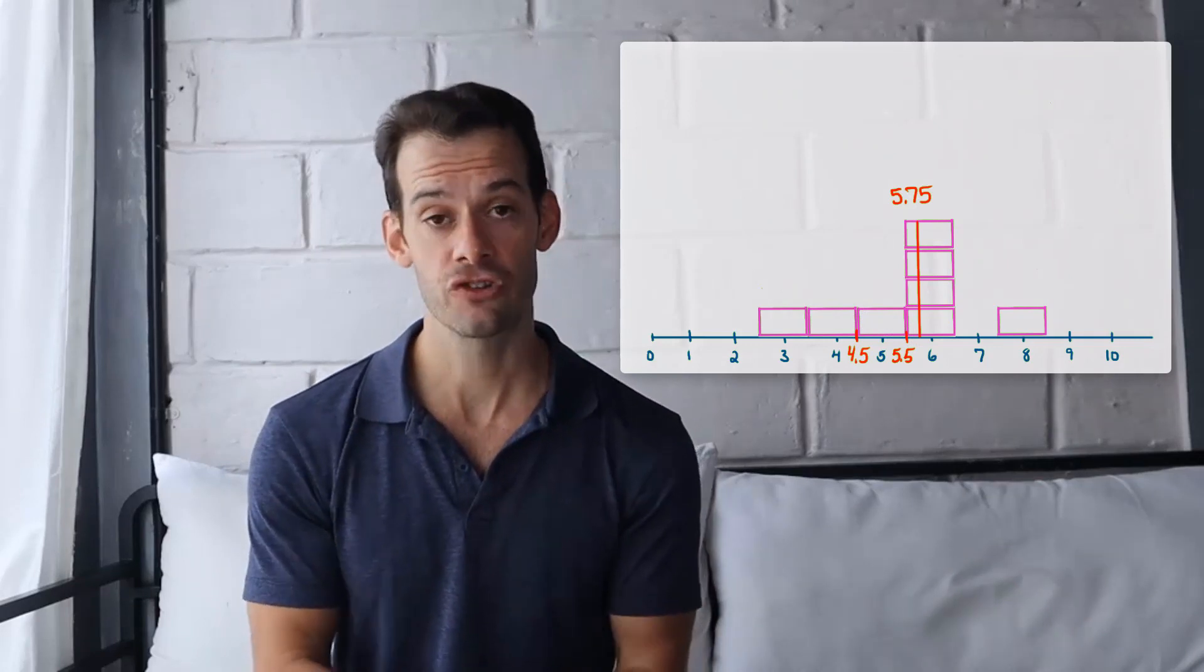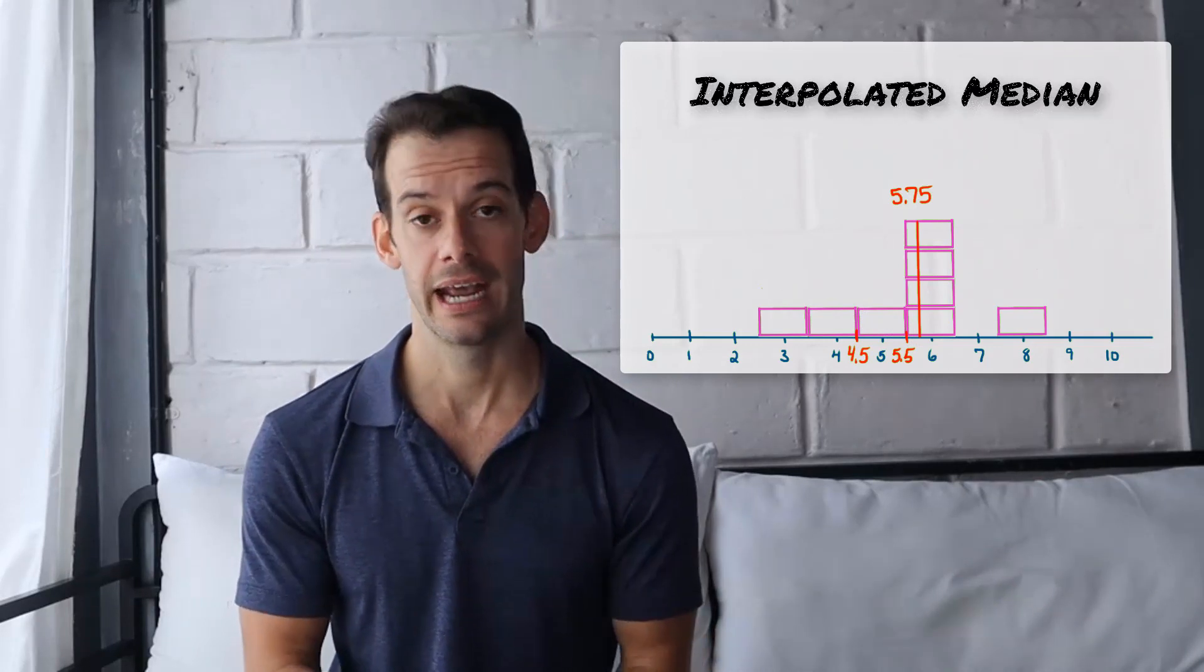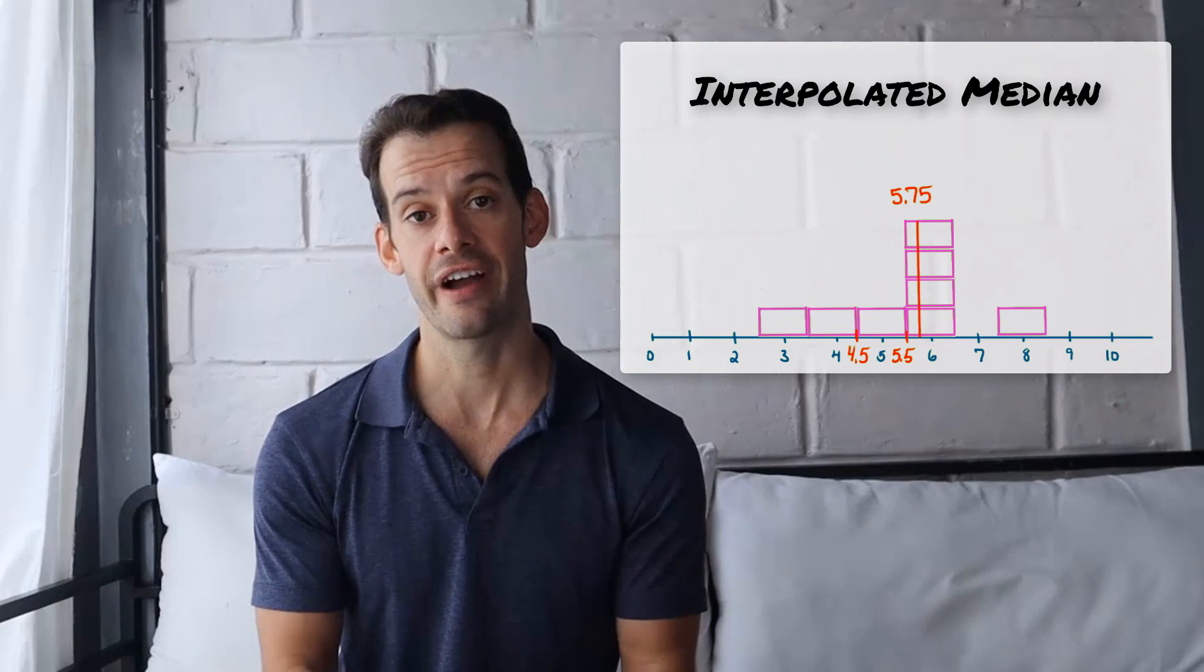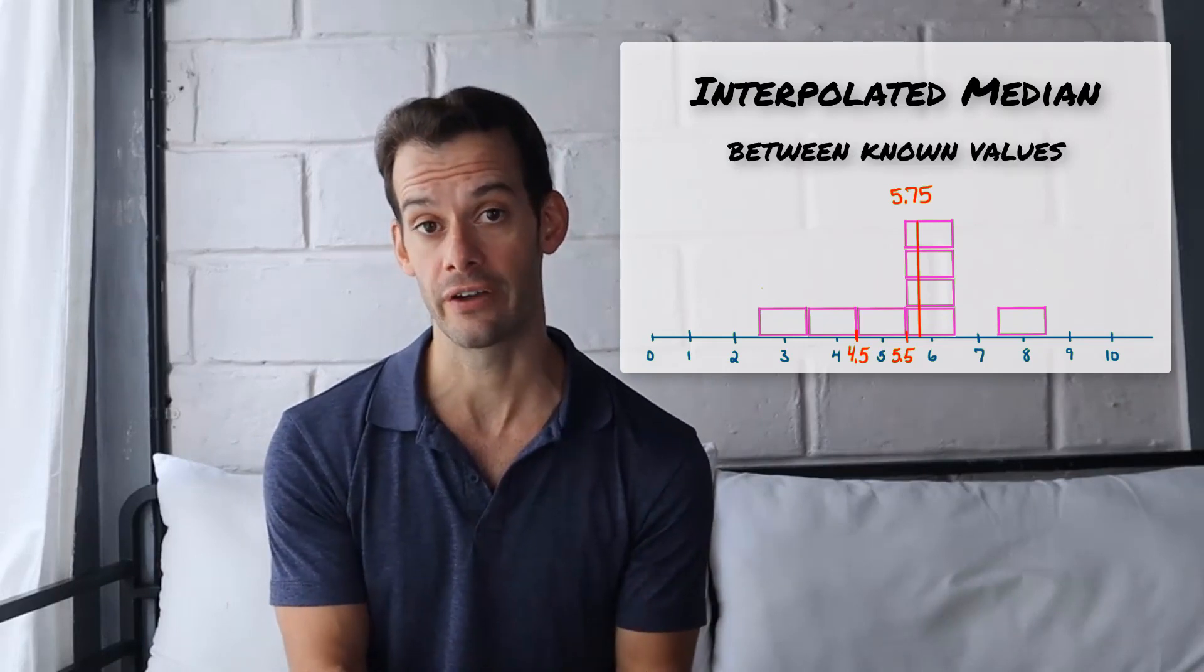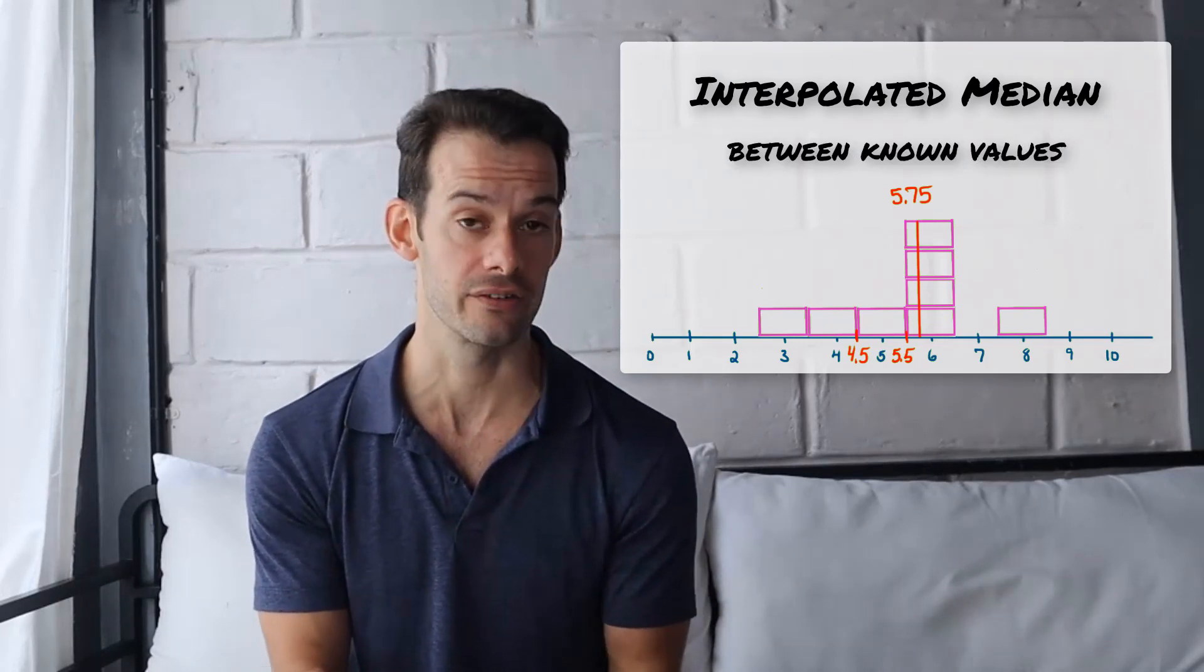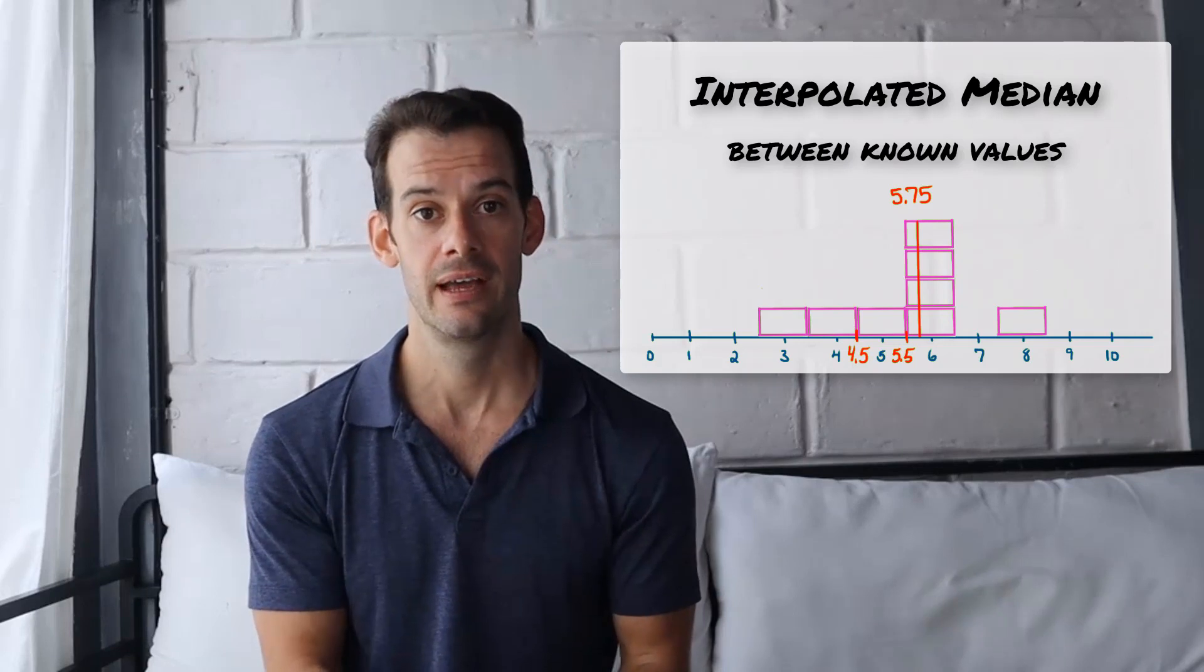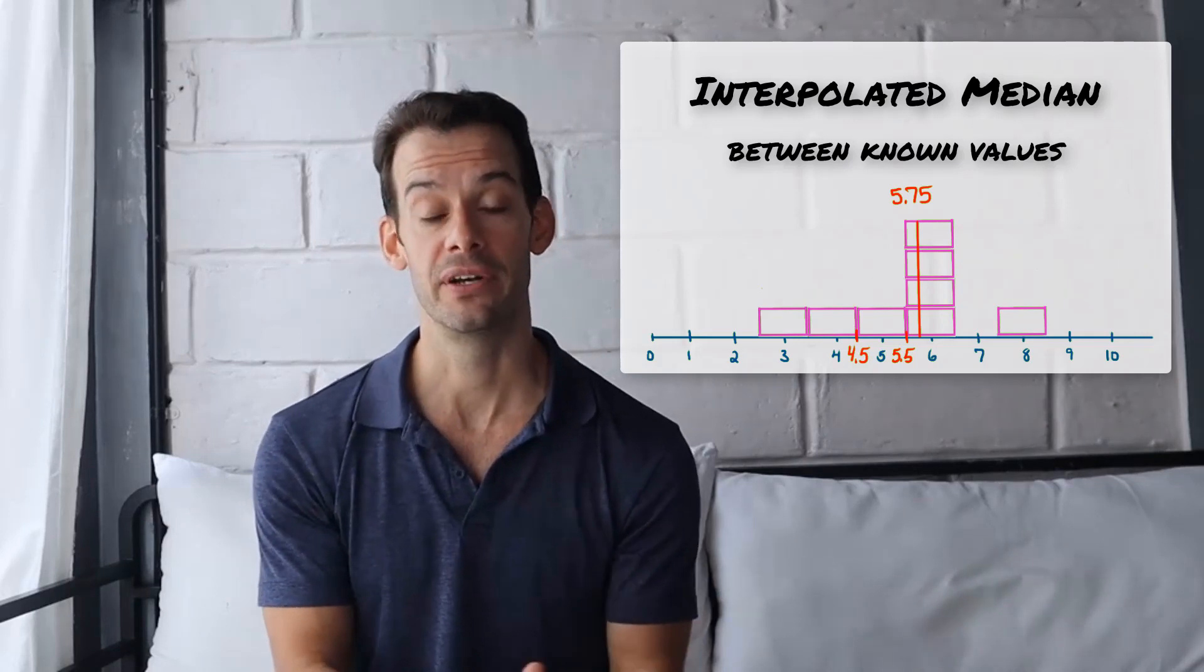This precise median can also be called an interpolated median. And interpolated here means that you're finding a value that's between your known values. So our known values were whole seconds, like 5 or 6. And our interpolated median is going to be between those points.